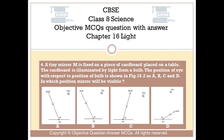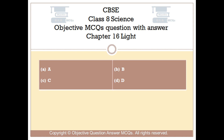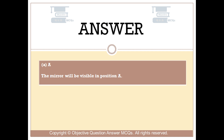Question number 4: A tiny mirror M is fixed on a piece of cardboard placed on a table. The cardboard is illuminated by light from a bulb. The position of the eye with respect to the bulb is shown in figure 16.2 as A, B, C, and D. In which position will the mirror be visible? Option A. Option B. Option C. Option D. The right answer is option A. The mirror will be visible in position A.